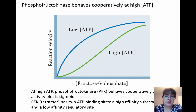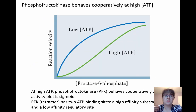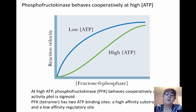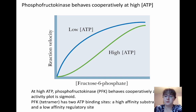One thing that this picture doesn't show as well is that phosphofructokinase is actually a tetramer. Because of that, there are actually multiple binding sites for ATP. It has an active site for the ATP that acts as a substrate to make the reaction work, but it also has a low affinity regulatory site. So there are actually two different binding affinities: a very high affinity for the substrate site and a lower affinity for the regulatory site.